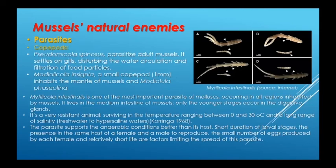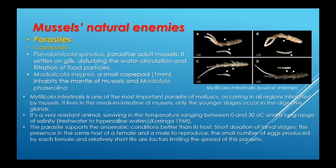Other types of parasites are copepods. Pseudomyicola spinosus parasitizes adult mussels, settling on gills and disturbing water circulation and filtration of food particles. Modiolicola insignis, a small copepod, inhabits the mantle of mussels. Mytilicola intestinalis is one of the most important parasites of molluscs, occurring in all regions inhabited by mussels. It lives in the mid-intestine of mussels, with only the younger stages occurring in the digestive glands. It is a very resistant animal, surviving at temperatures ranging between 0 and 30°C and a wide range of salinity from freshwater to hypersaline waters. The parasite tolerates anaerobic conditions better than its host. Short larval stage duration, the presence of both a female and male in the same host, the small number of eggs per female, and a relatively short life are factors limiting the spread of these parasites.